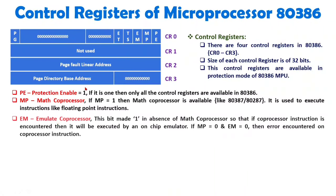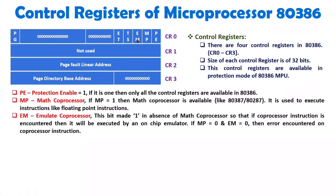The EM bit, which is bit D2 of CR0, is the Emulate Coprocessor bit. If the math coprocessor is not available — meaning MP equals 0 — and a coprocessor instruction is encountered, we will set this EM bit to 1 to emulate that instruction on the on-chip emulator. So EM is set to 1 in the absence of a math coprocessor, so that coprocessor instructions are executed by the on-chip emulator.